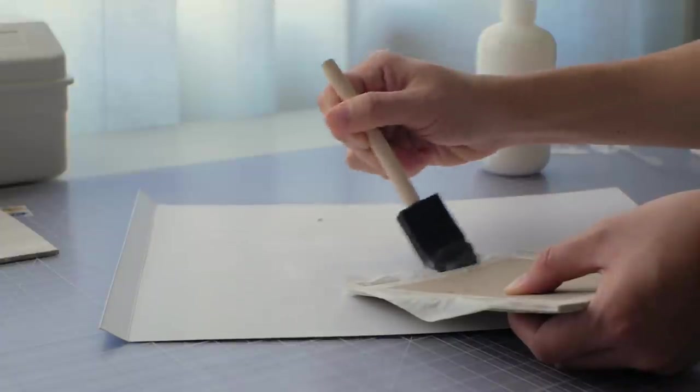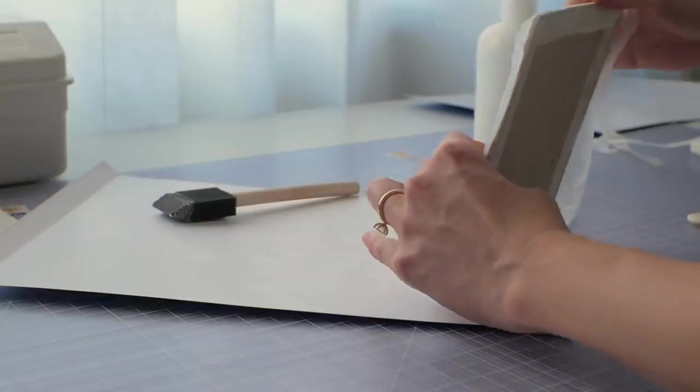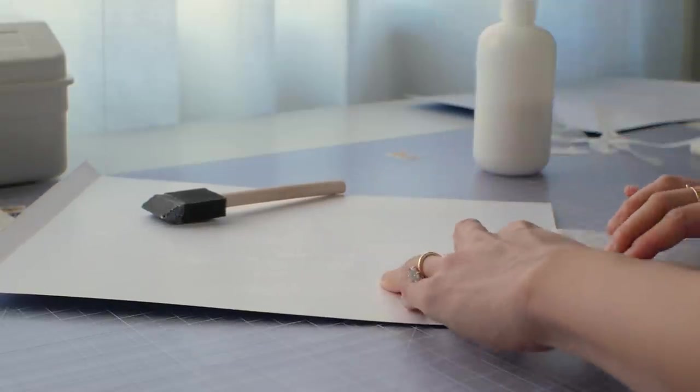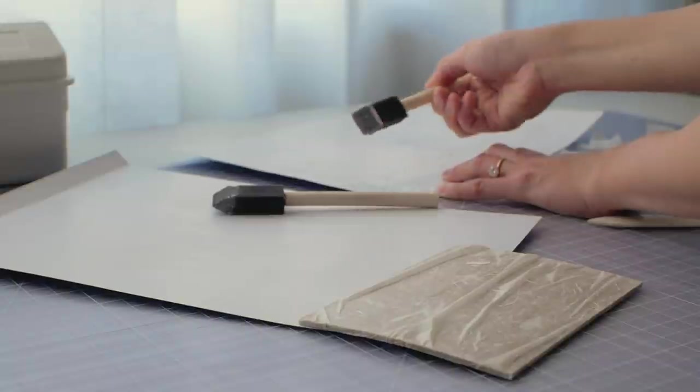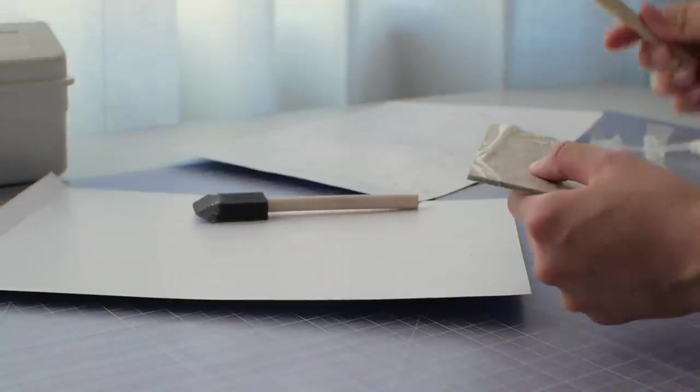Gluing down the edges was tricky because I didn't want to squish the folds on the front side. Here I'm using Mod Podge to stiffen and protect the folds.